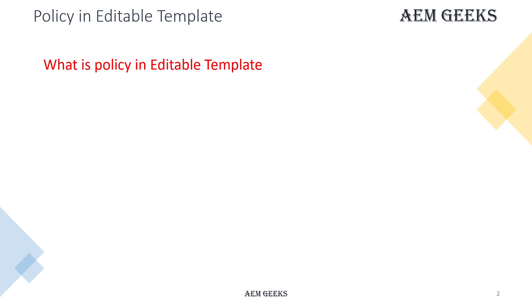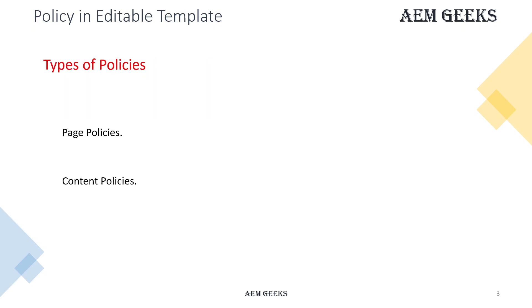What is content policy? Using policy you can define the behavior of your editable templates - meaning the pages as well as the components behavior. Through content policies you can define the design properties, which will be available throughout your pages for that particular template, and you can define or enable the style system. Broadly you can categorize policies in two ways: page policy and content policy.